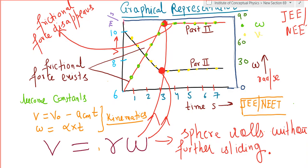That condition has been shown with the help of highlighted dots you can see on the V versus T and omega versus T graphs. It represents V equals r omega.